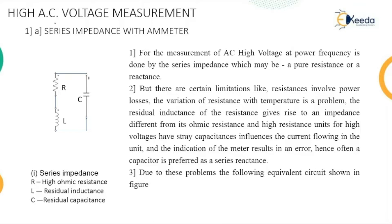In this high AC voltage measurement, we will be discussing four different methods, that is four different circuit diagrams. In the first method, the first method is referred to as series impedance with ammeter. So we have four different circuits for the discussion on series impedance with ammeter.